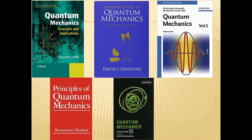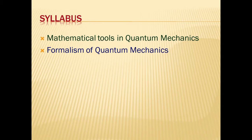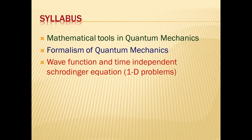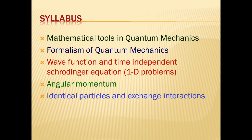I have broadly divided the syllabus into five units. The first unit is Mathematical Tools in Quantum Mechanics. The second unit is Formalism of Quantum Mechanics. The third unit is Wave Function and Time-Independent Schrödinger Equation, including one-dimensional problems like particle in a box and the harmonic oscillator. The fourth unit is Angular Momentum, and the fifth unit is Identical Particles and Exchange Interactions.